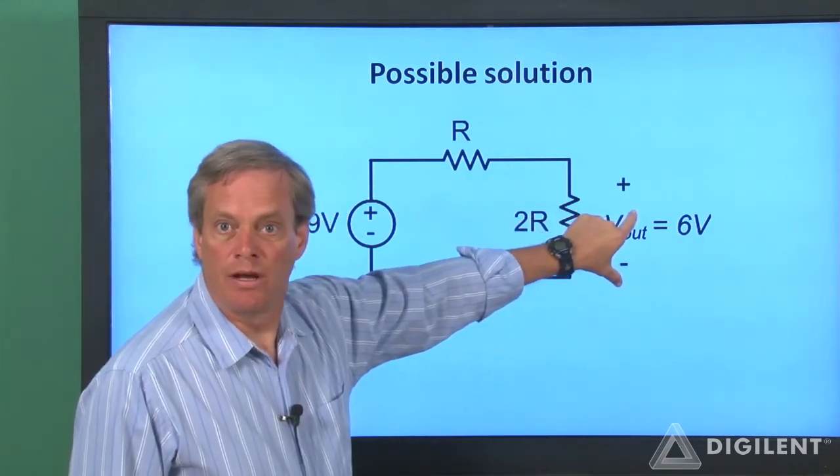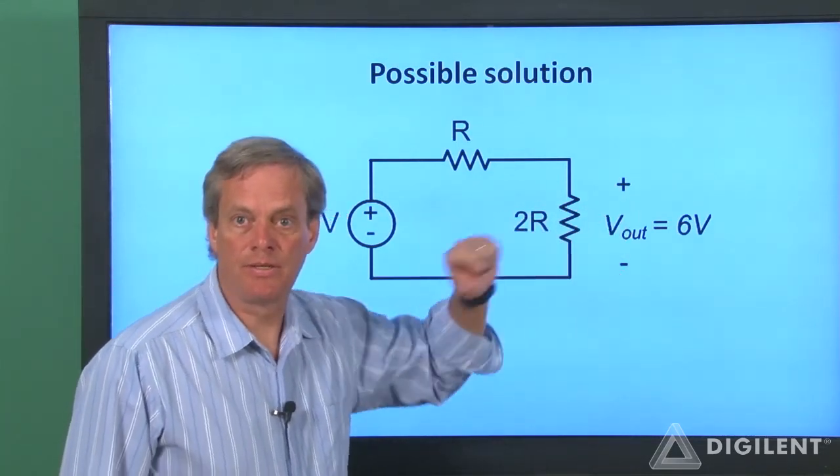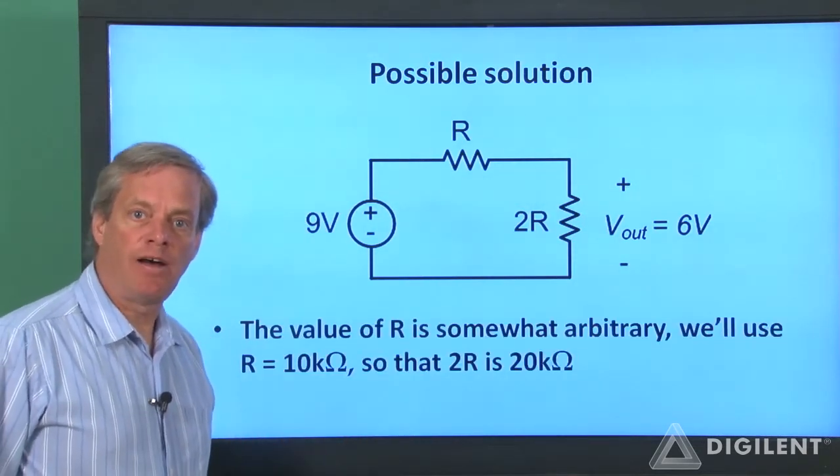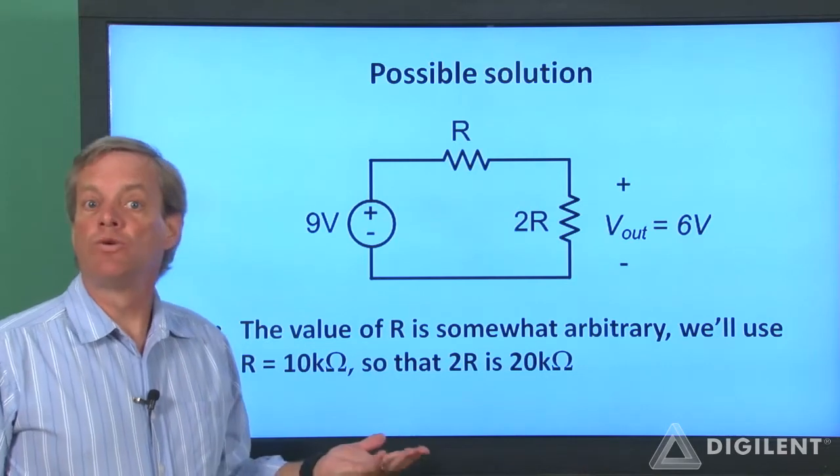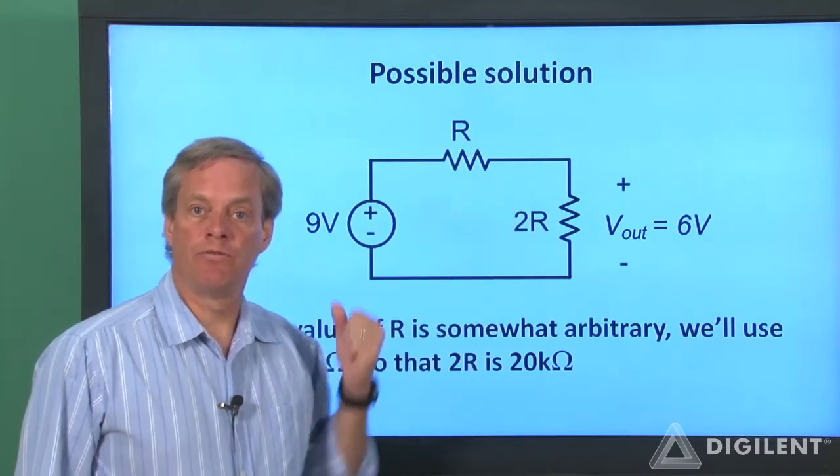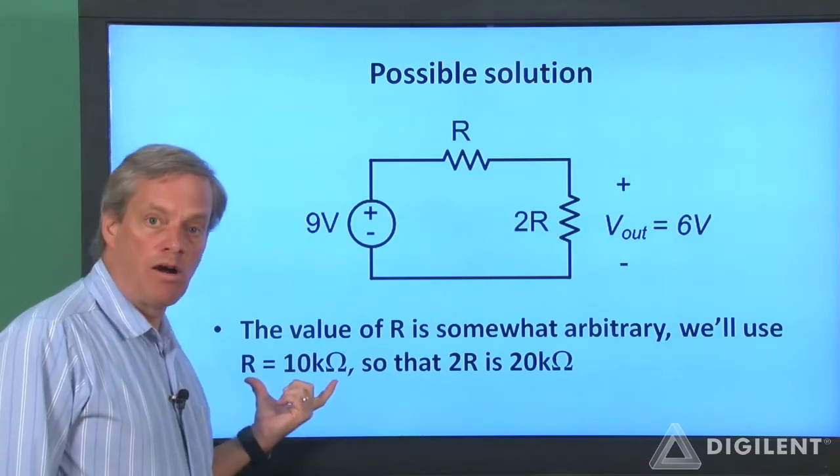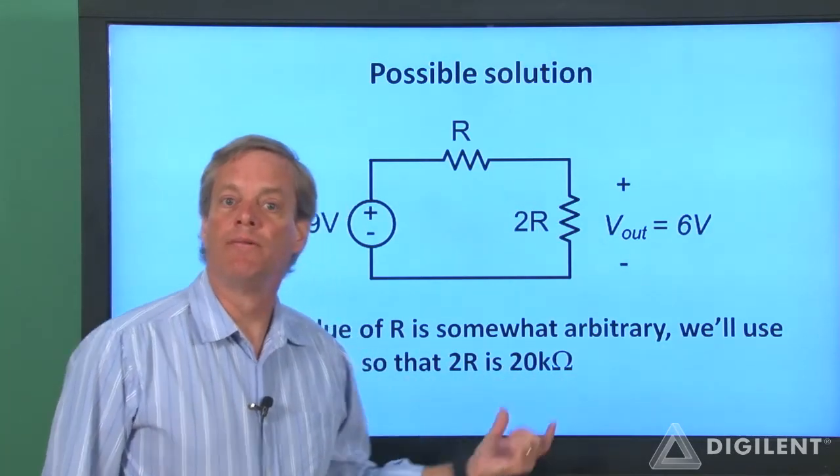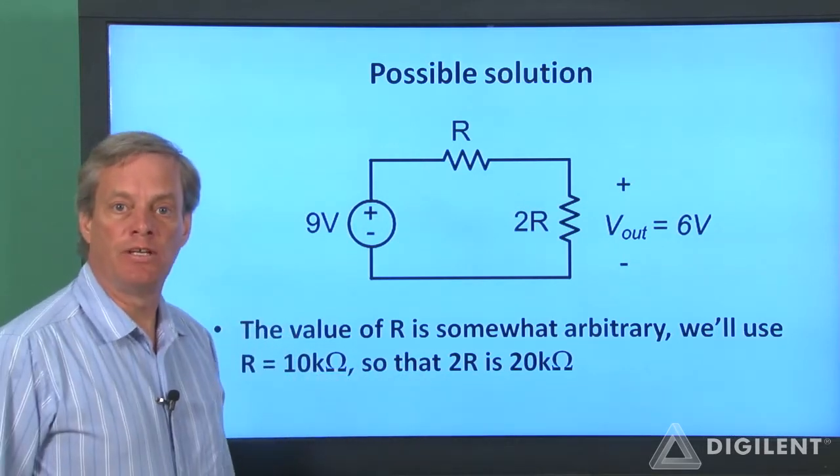There's really nothing in our design criteria that specifies what R should be, so we can choose it arbitrarily. The only thing that's important is the ratio between the two resistors. I'll set R to be 10 kilohms so that 2R is now 20 kilohms. Let's wire up the circuit and see if it does what we want it to do.